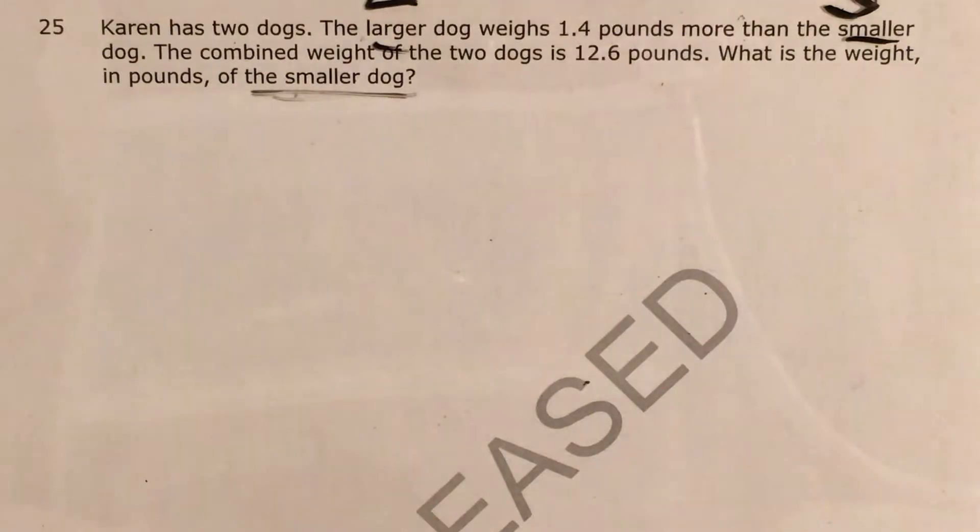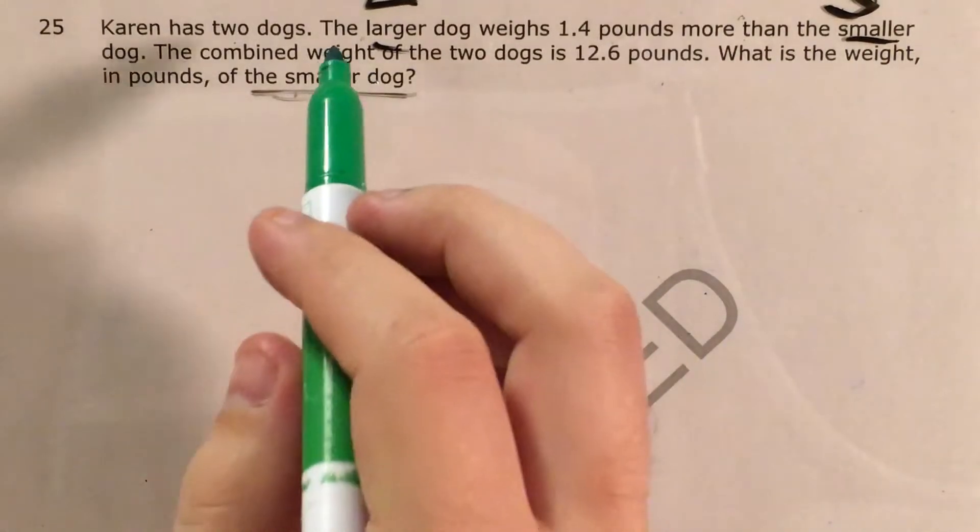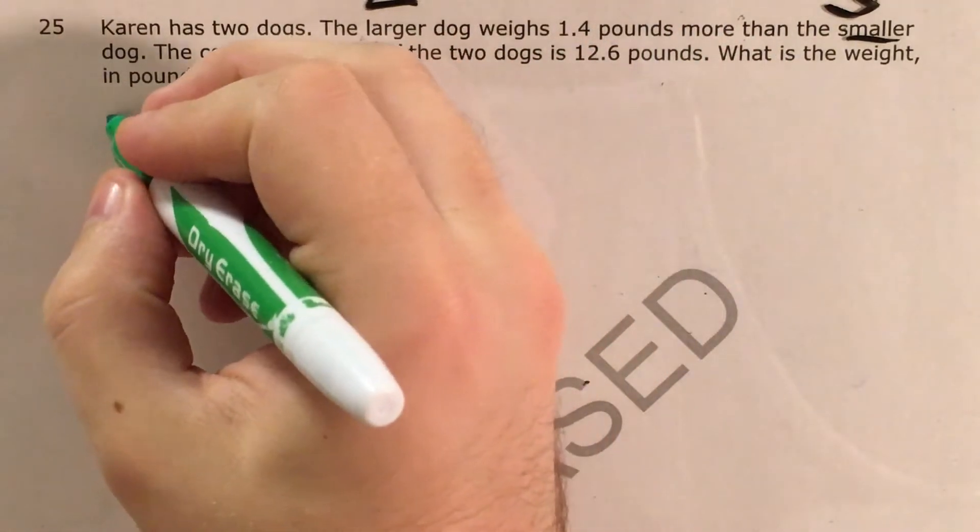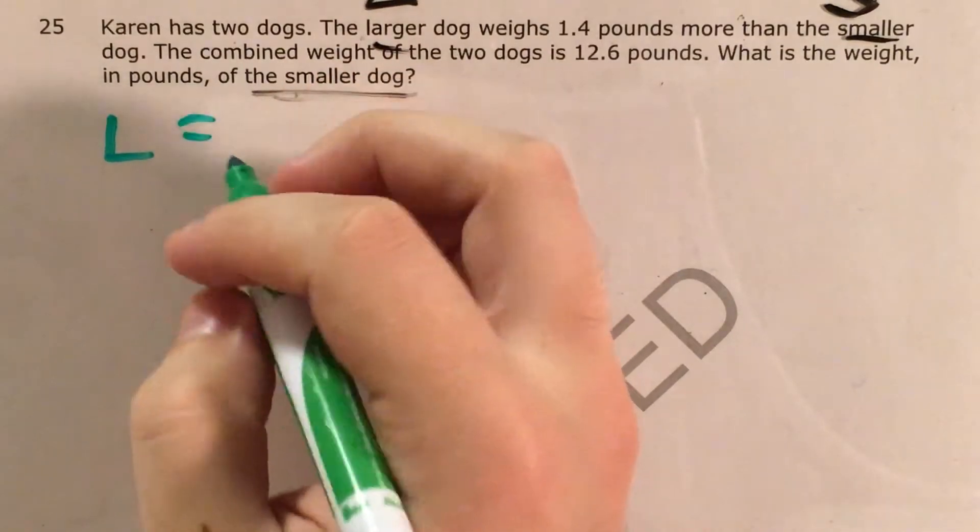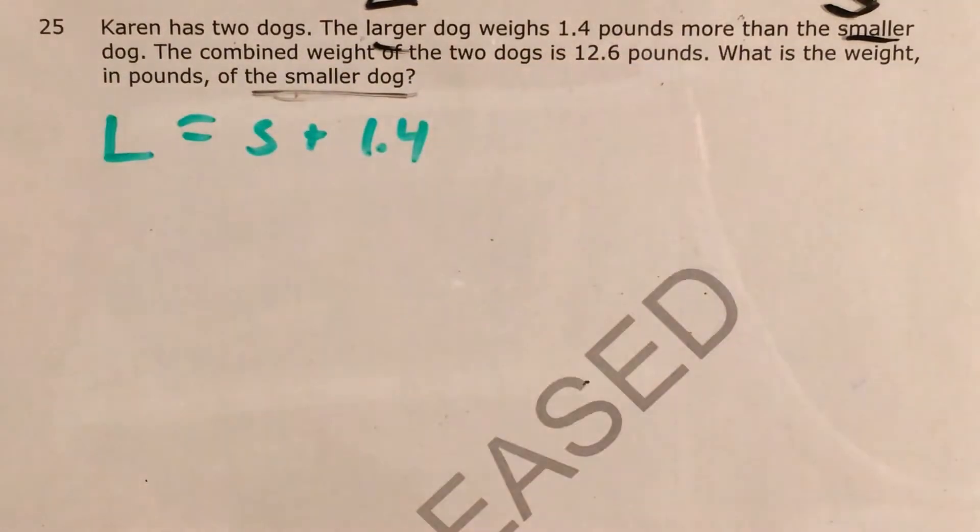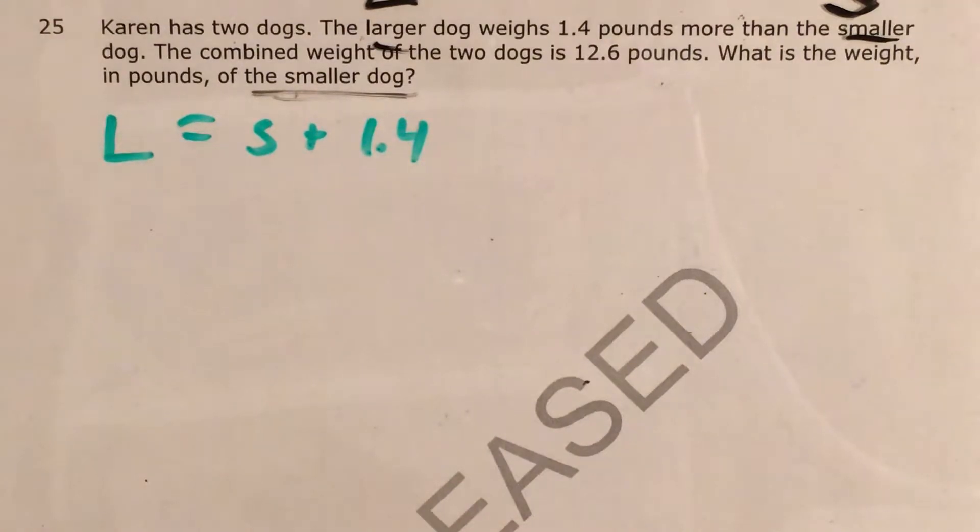Let's go ahead and translate some of the words in this to equation language. If it says the larger dog weighs 1.4 pounds more than the smaller dog, then that tells me that the weight of the larger dog is the smaller dog's weight plus 1.4 pounds. That's one of our equations.